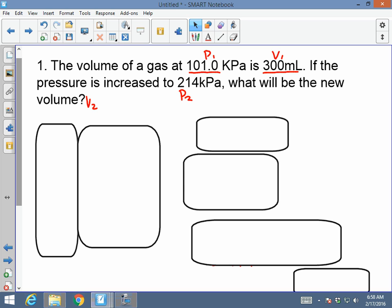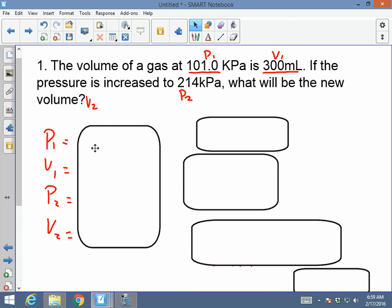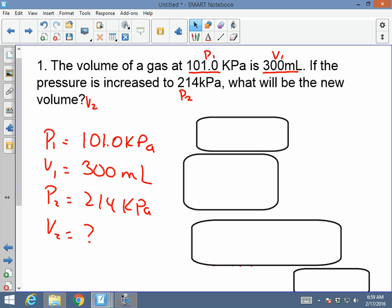Let's make things easy. I will begin by making a list of what I have: Pressure one, volume one, pressure two, volume two. Okay, let's see what else we have. I am given 101 kPa, which I saw in the question. I am given 300 milliliters. I am given 214 kPa, which is pressure two. And the question says, what's the new volume? Volume two.